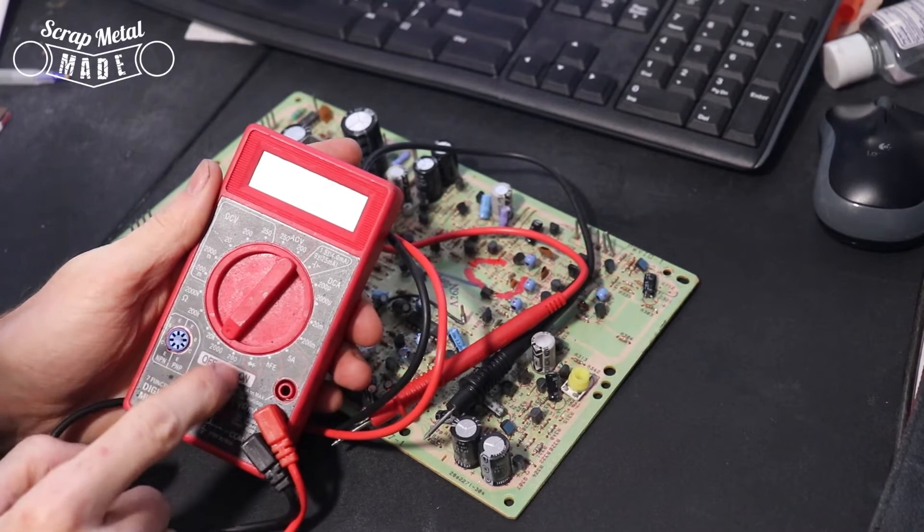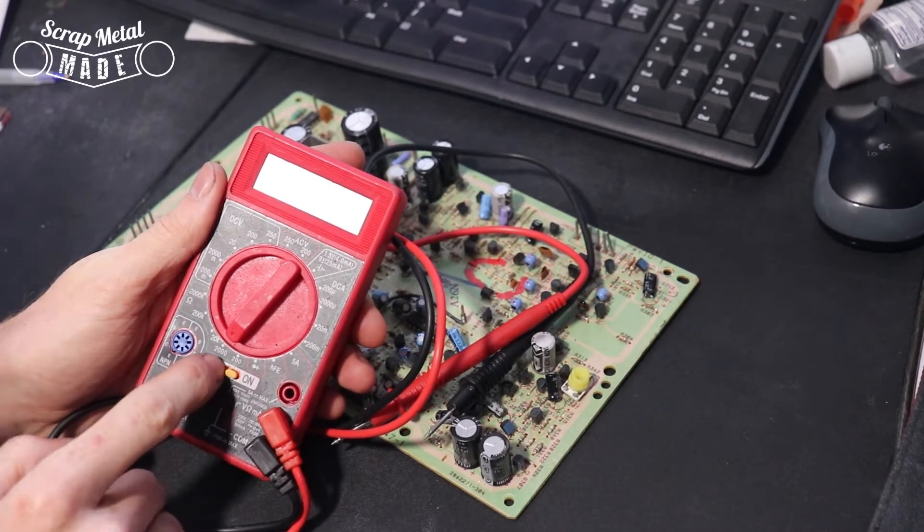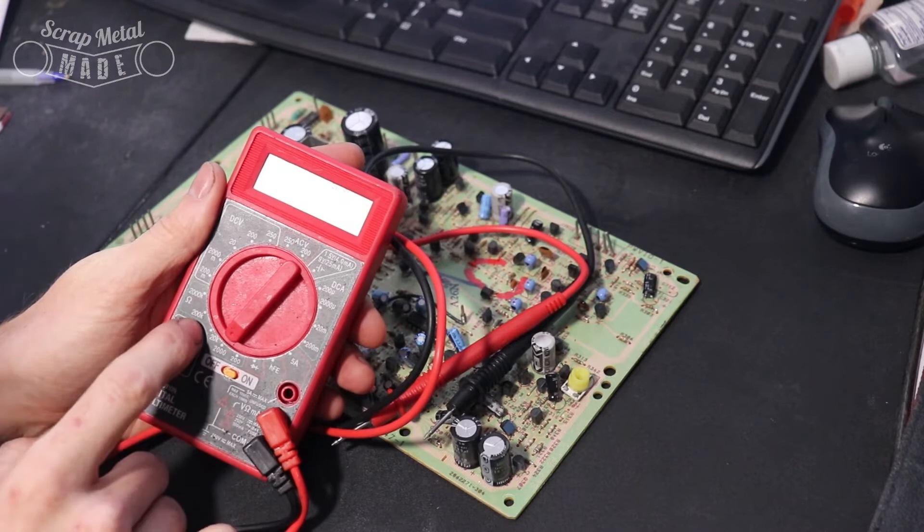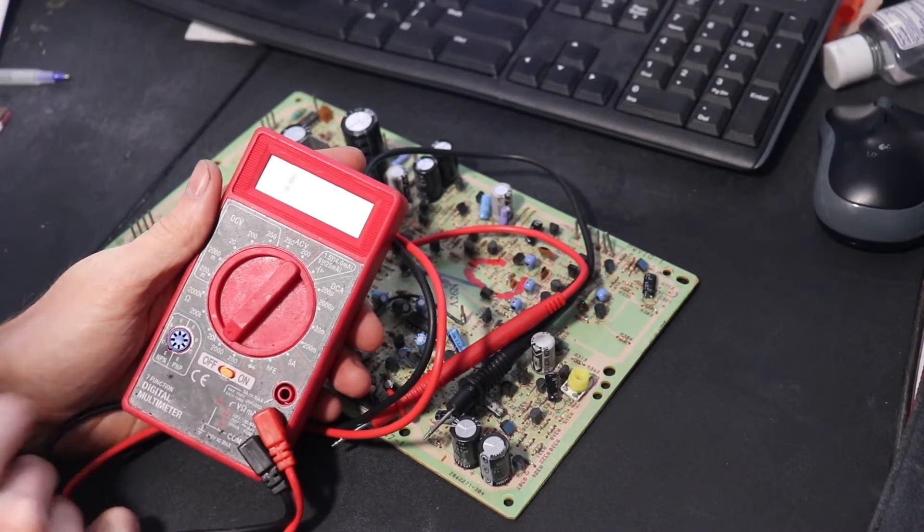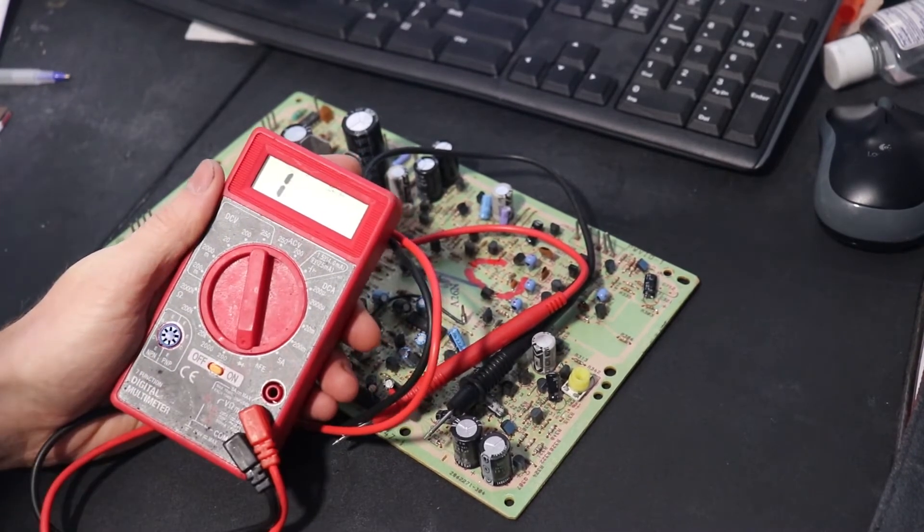You can see here there's a 200, a 2000, 20k, 200k, and 2000k settings on this multimeter.